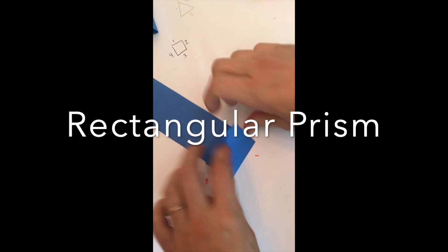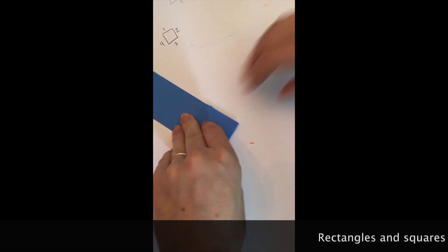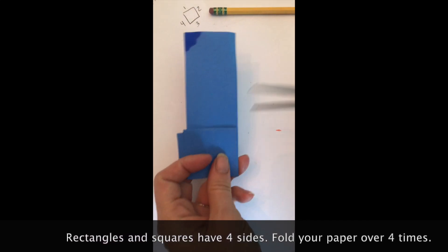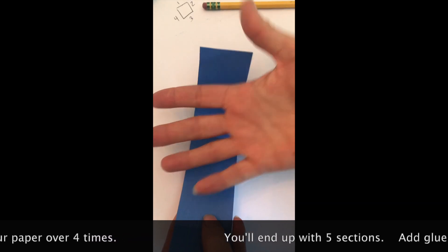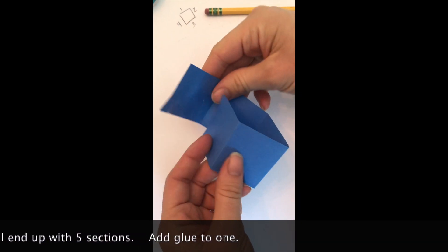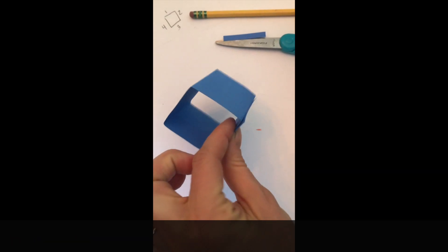A rectangular prism works the exact same way. I want to have a square on each end. So a square has four sides. I fold the strip of paper up over itself four times. Making sure I crease it well with a tool. Cut off the extra. Add glue to that fifth section because a square only has four sides. And I overlap one on top of the other to create the prism.